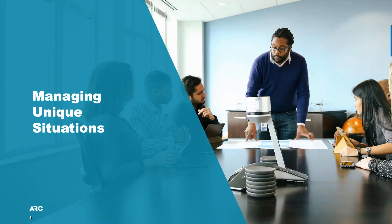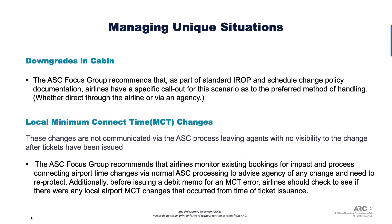Now some unique situations. Talking about downgrades in cabins: if this is part of a standard IROP or schedule change procedure, airlines should definitely have specific information and call-outs for this scenario as the preferred method, whether it's the airline or agent contacting the customer. This is never a good scenario — no one wants to tell a customer they've been downgraded from business into economy — so there should be specific information on how airlines want this to be handled.